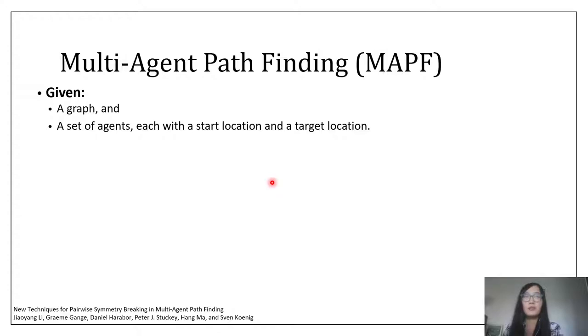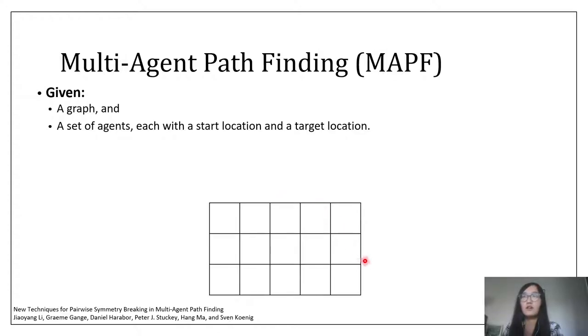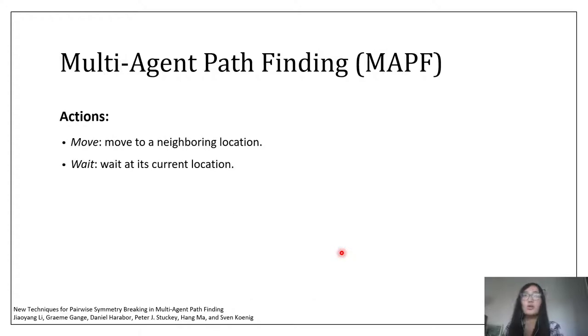To formally define this problem, we are given a graph. Like here, we have a four-neighbor grid. We are given a set of agents, each with a start location and a target location. We assume that at every time step, an agent can either move to a neighboring location, or wait at its current location.